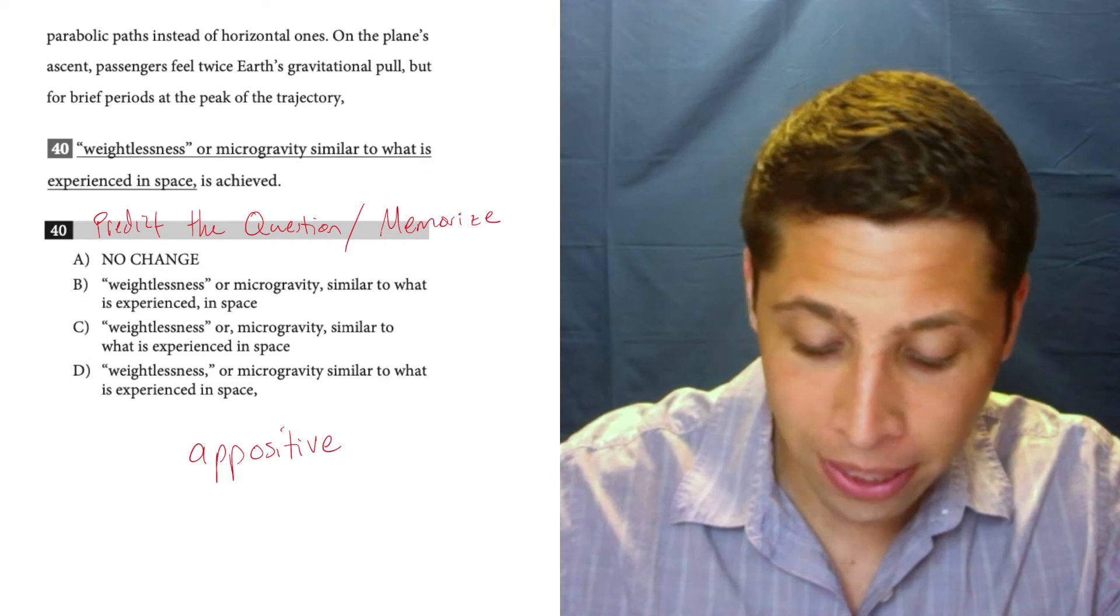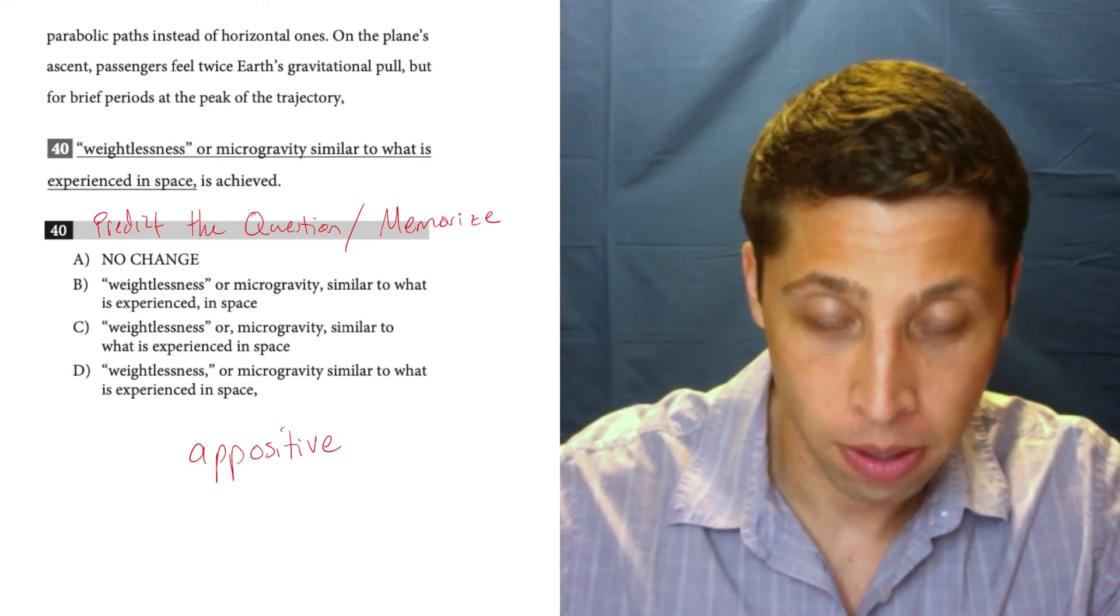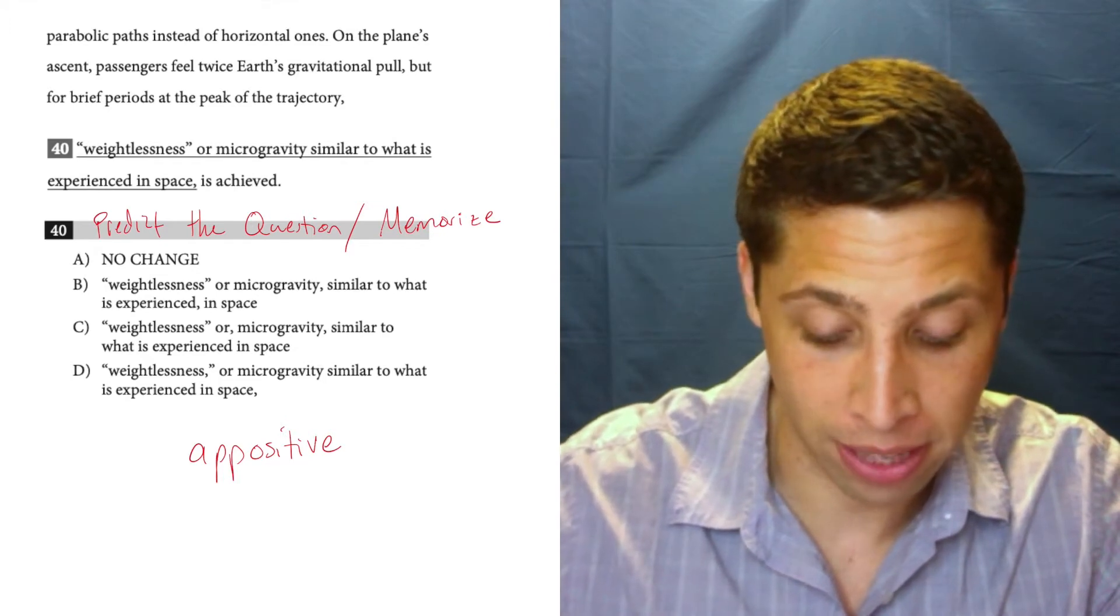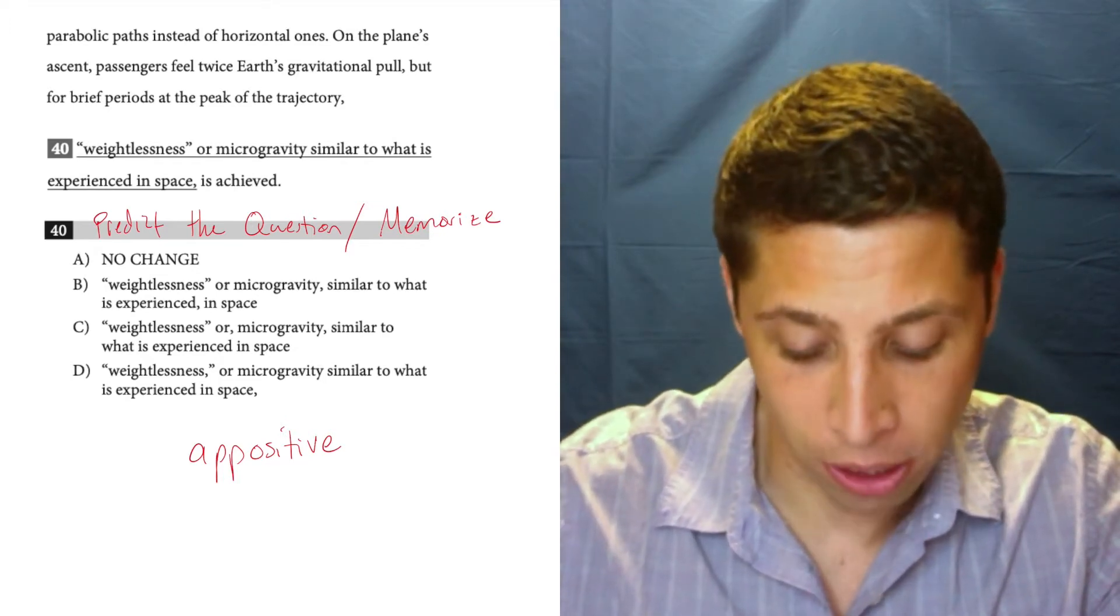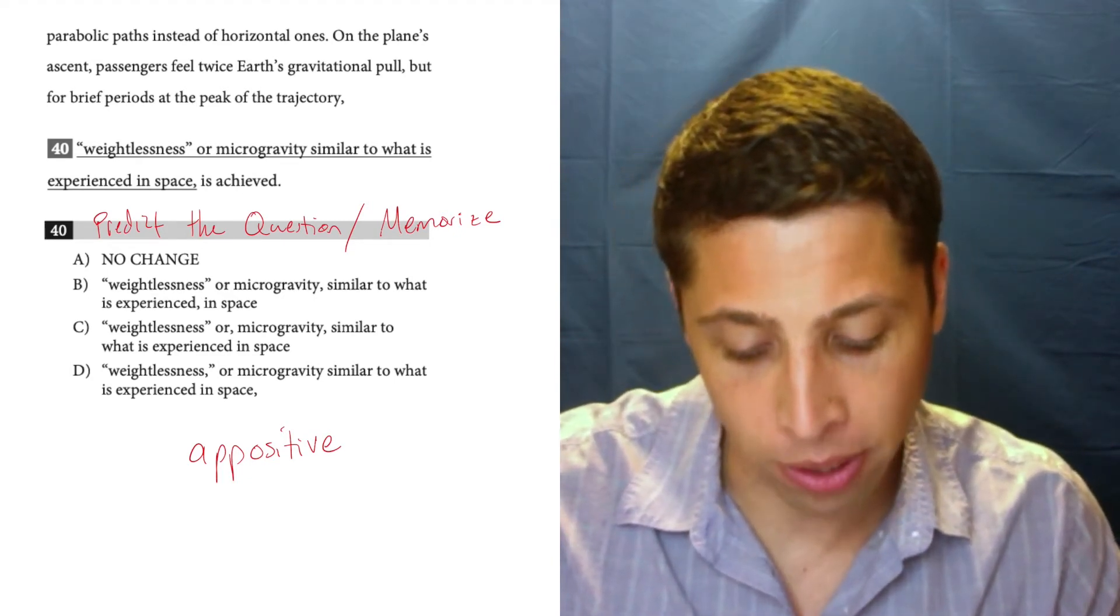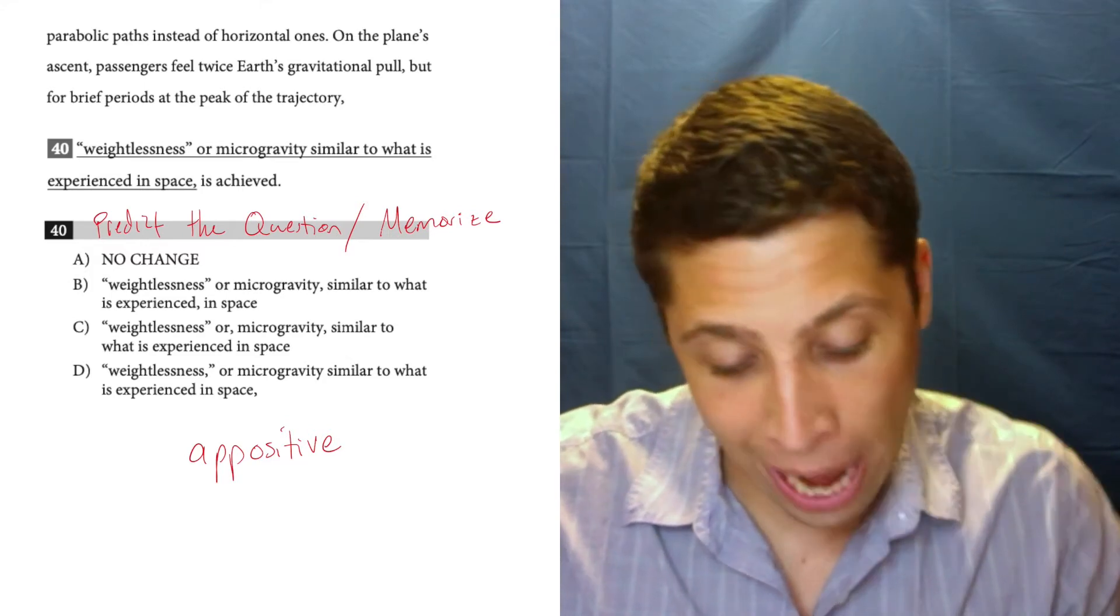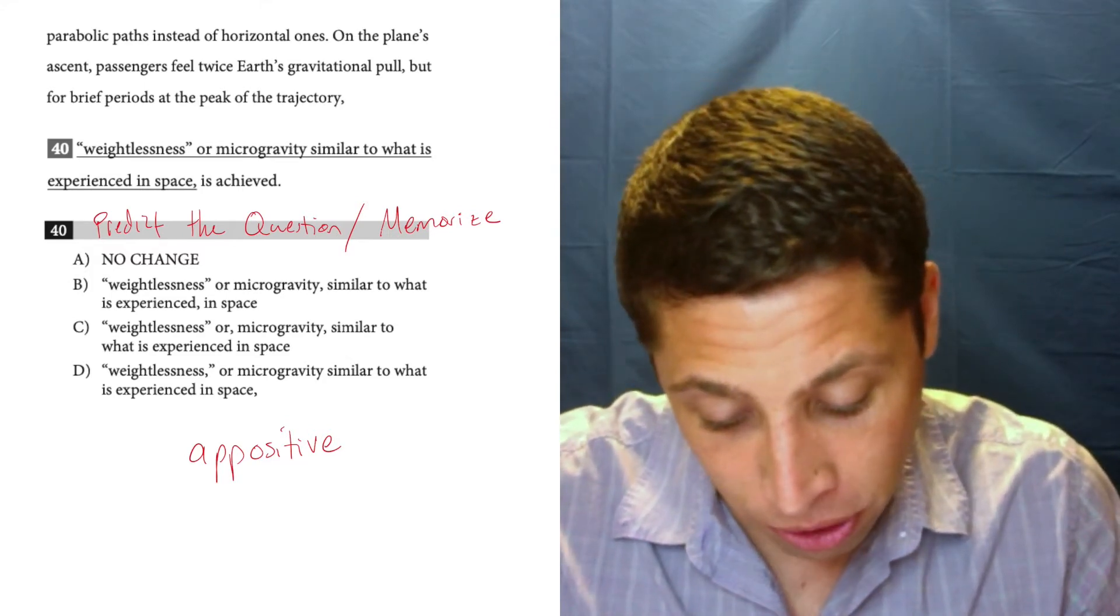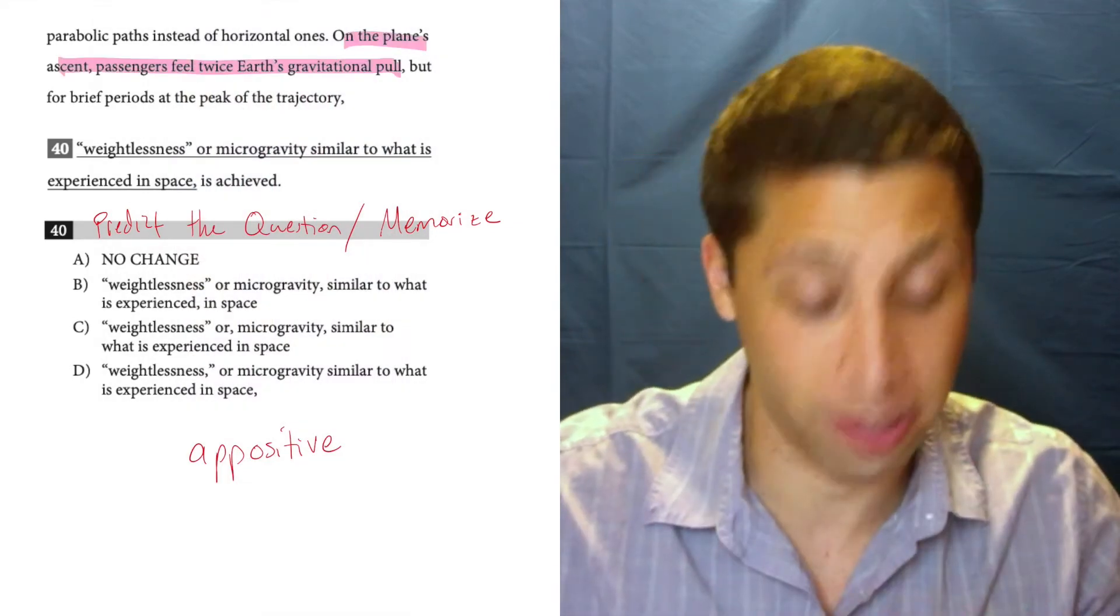On the plane's ascent, passengers feel twice Earth's gravitational pull. So that's a sentence. Now it kind of resets. But for brief periods at the peak of the trajectory, kind of an intro, weightlessness or microgravity similar to what is experienced in space is achieved. So if I were to cut out the first part, which is its own sentence, right? So here to here is its own sentence.